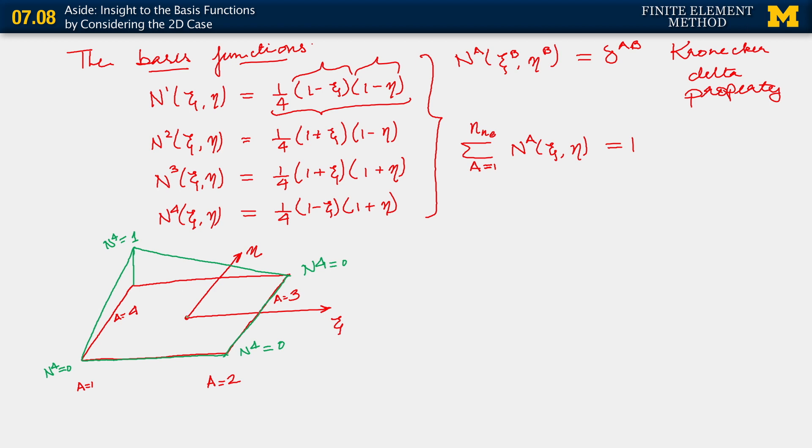Now, at this particular point, at the origin, it takes on the value of 1 quarter. And this can be checked by just substituting xi and eta equals 0 in N4, in fact, in any one of the basis functions. All the basis functions evaluate to a quarter at the origin. So it gets just about that big.